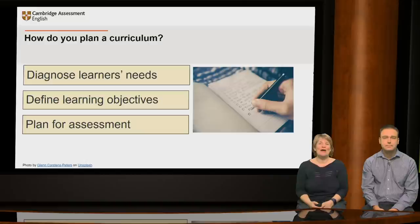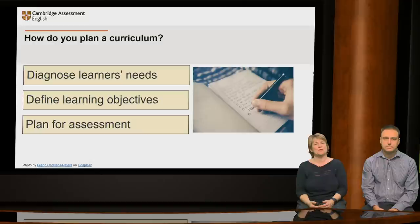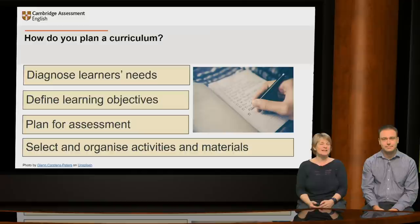When you've defined your learning objectives, you can begin to think about how you will check learning as you go along. Bearing in mind what learners want to be able to do with the language by the end of the course, what kind of assessments would make sense? If the main goal is spoken communication, for example, the best way to assess this is unlikely to be solely via a written test. Lastly, you can start to think about what activities and materials the learners will need in order to achieve the objectives you've set, and in what order and at what pace it is sensible to cover them.